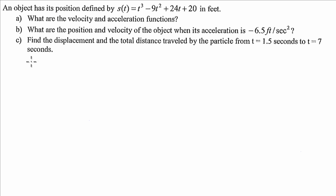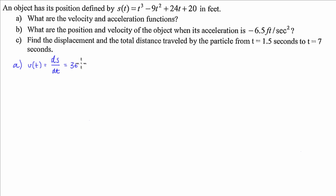This is quite easy if we know how to differentiate. The velocity function V of t — we know that velocity is just change in distance over change in time, which can also be represented as the derivative of displacement with respect to time. So if we take the derivative of this function, we get 3t squared minus 18t plus 24.